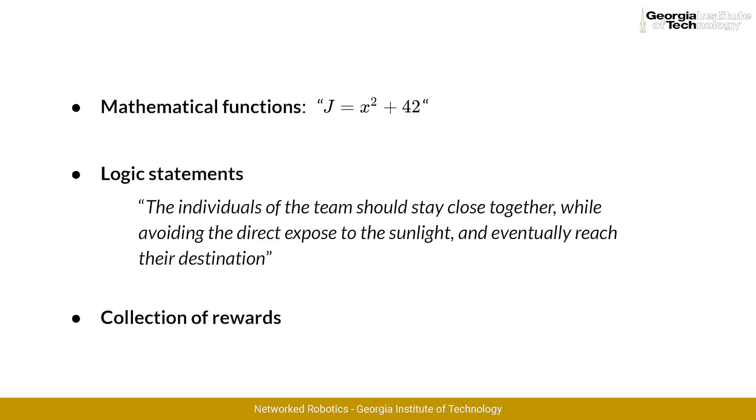In the definitions we just introduced, there are two central concepts we will encounter throughout the entire series. The first is the existence of a common objective between the individuals of a group. The second is the existence of a flow of information between them. Generally speaking, this objective can have different forms and be subject to different types of constraints, and representing an objective given a problem is not necessarily always easy and straightforward.